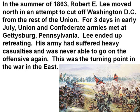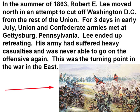In the summer of 1863, Robert E. Lee moved north in an attempt to cut off Washington, D.C. from the rest of the Union. For three days in early July, Union and Confederate armies met at Gettysburg, Pennsylvania. Lee ended up retreating — his army had suffered heavy casualties and was never able to go on the offensive again. This was the turning point of the war in the East. Here you see an artist's rendition of the Battle of Gettysburg, one of the most famous battles of the Civil War.